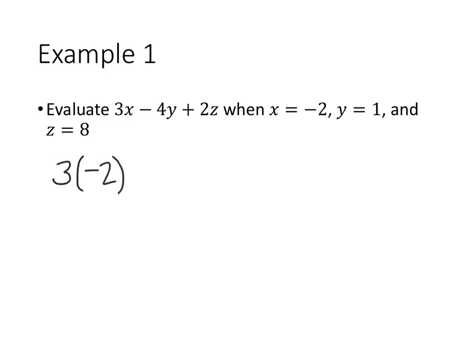The next term in our algebraic expression is minus 4y. So minus 4, and they tell us y should be 1, so we'll put in a 1 in parentheses. And then finally, plus 2z, plus 2 times z is 8.